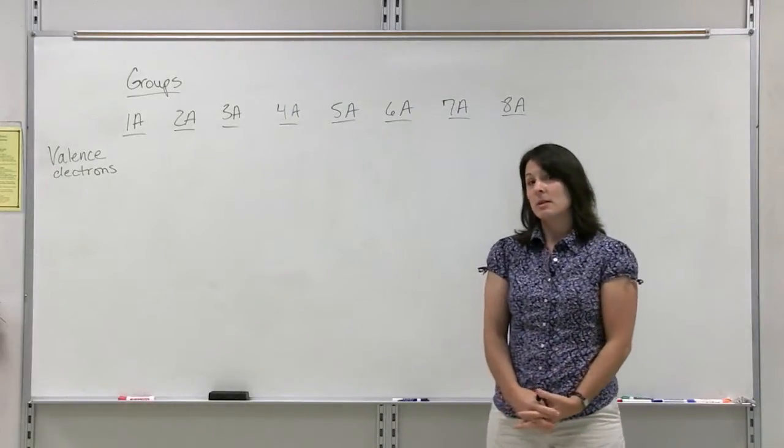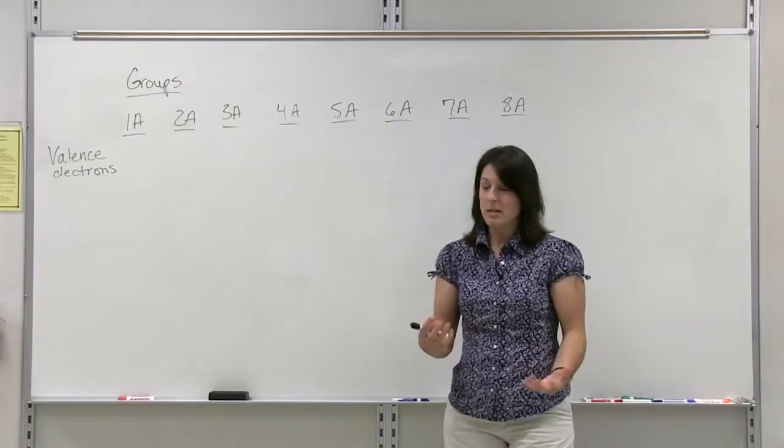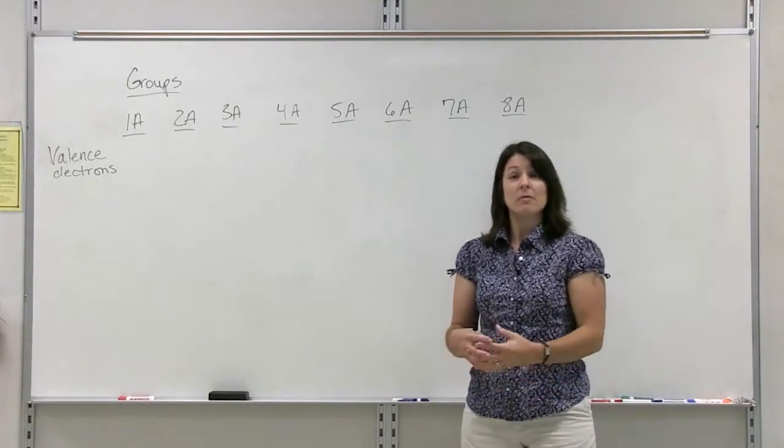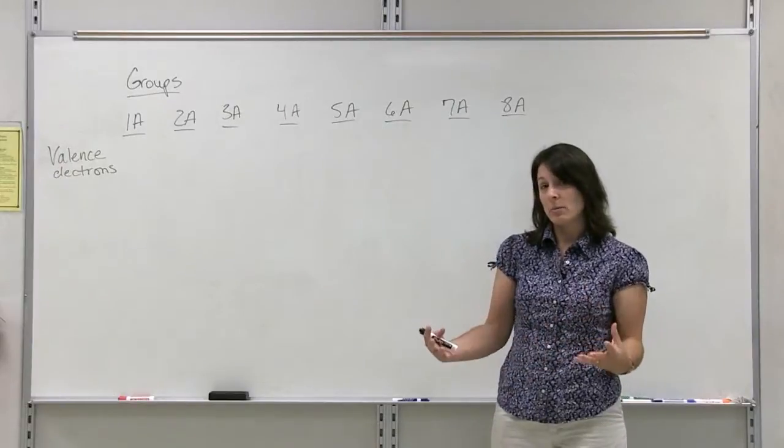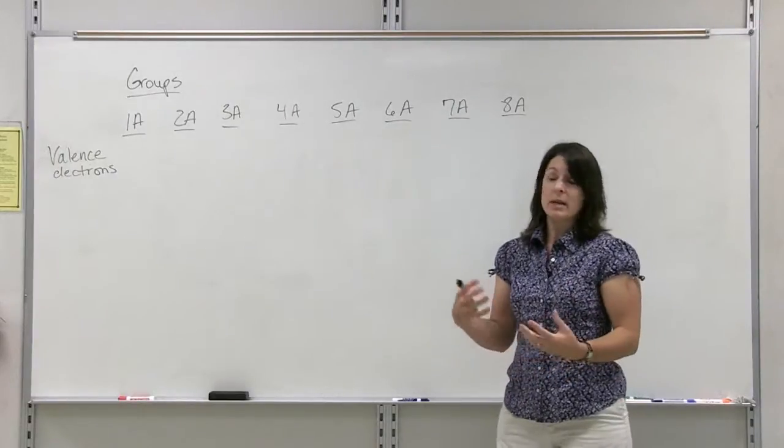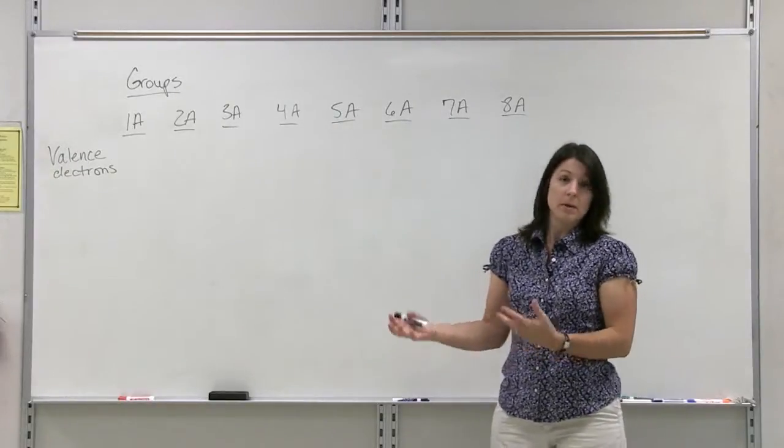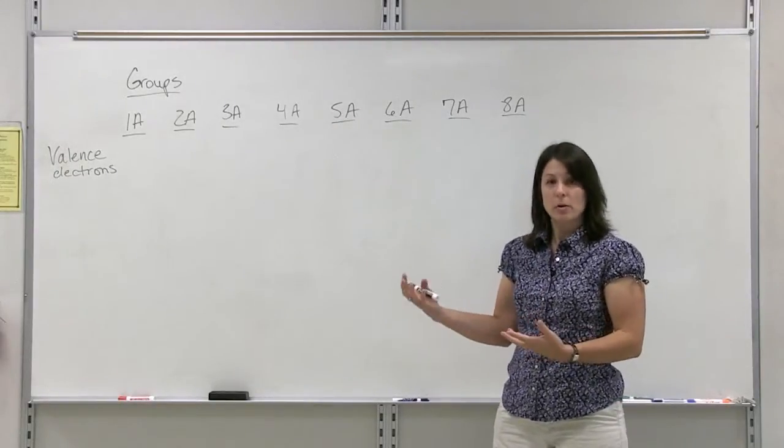The first thing we need to understand about atoms is that they have a specific number of valence electrons. Valence electrons are the electrons that are on the outermost energy level, and we can tell the number of electrons in the representative group atoms by their group number.